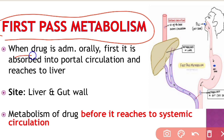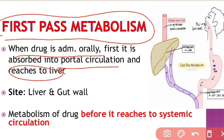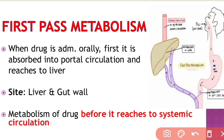When the drug is administered orally or swallowed, it is first absorbed into the portal circulation and it reaches to the liver, as you can see here. When the drug is taken orally, it will first reach to the digestive system or stomach, then it is absorbed into the portal circulation and reaches to the liver. The major site for first pass metabolism is the liver.